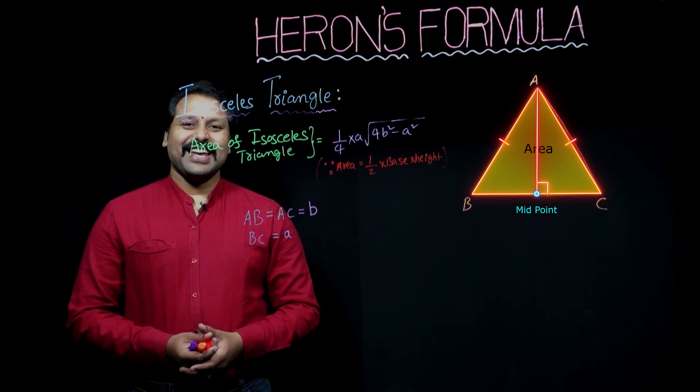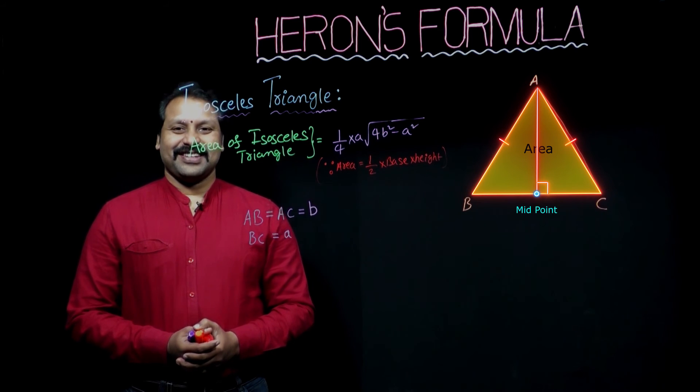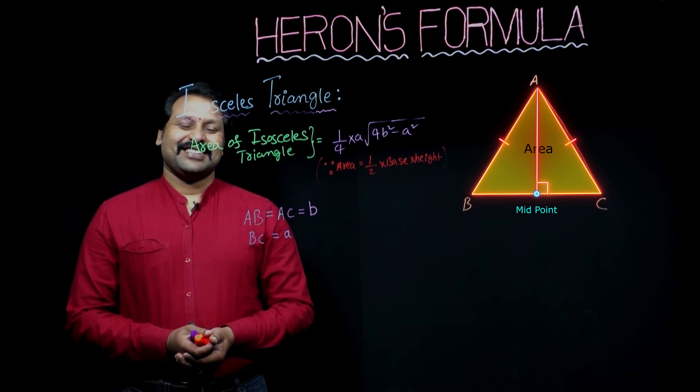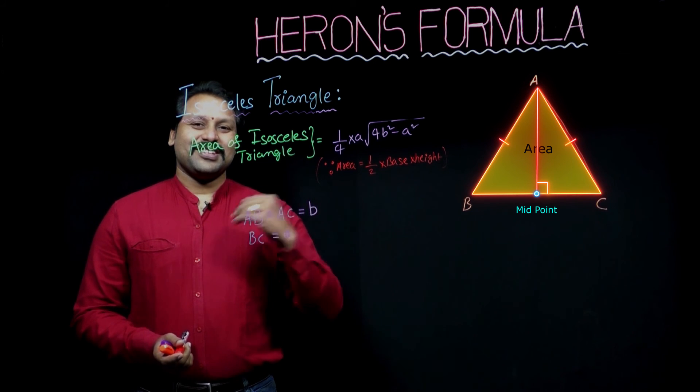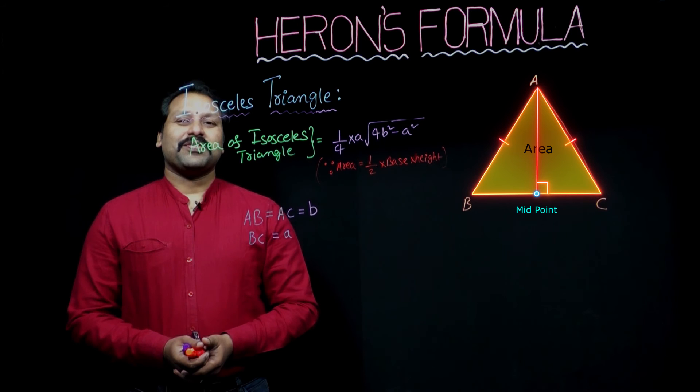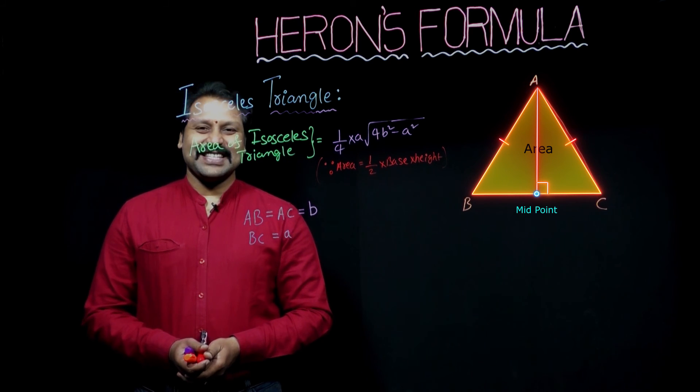Then we get a right angle triangle. By using Pythagoras formula, you get the height. Then substitute in this formula. Finally, we got 1 by 4 into A into under root 4B square minus A square.